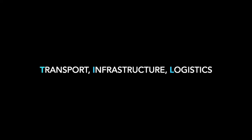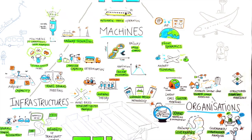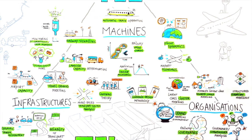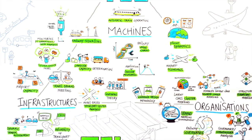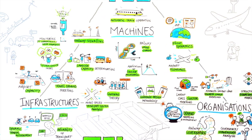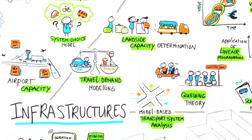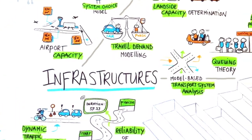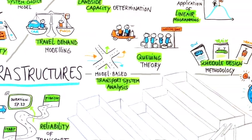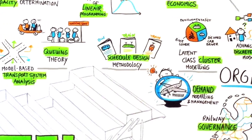The master programme Transport Infrastructure and Logistics, or in short TIL, explicitly looks at this complexity by integrating three traditional perspectives that are complementary and strongly connected: the machines perspective, the infrastructure perspective, and the organisation perspective.